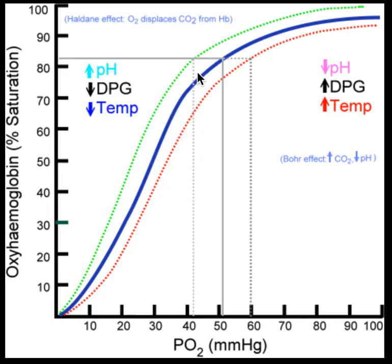Where a right shift 'fixes the wrong' — the phrase I used — where the curve shifts to the right to increase the rate at which oxygen leaves the hemoglobin, a left shift does just the opposite. It actually makes oxygen stick to hemoglobin more; or more accurately, hemoglobin itself holds on to oxygen tighter when these conditions are present.